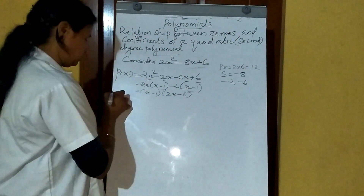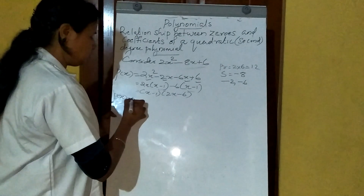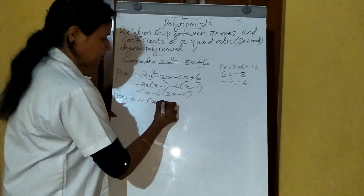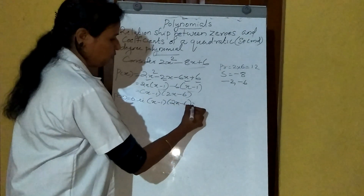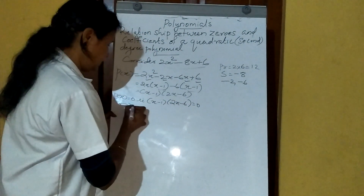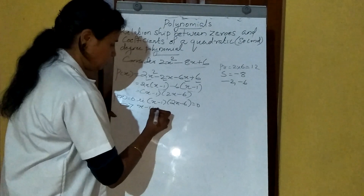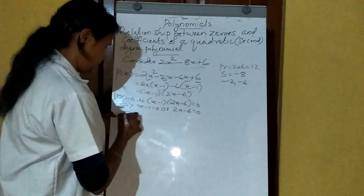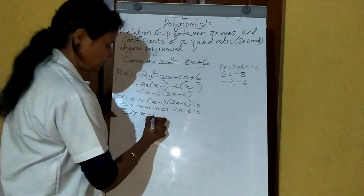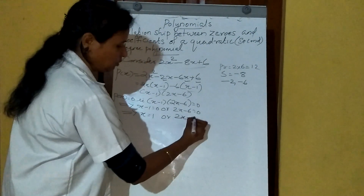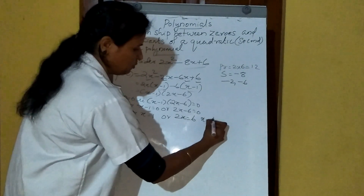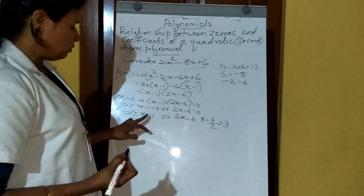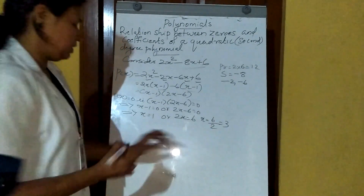For finding zeros, we take p(x) equal to 0. That is, (x minus 1) into (2x minus 6) equals 0. So x minus 1 equals 0 or 2x minus 6 equals 0, which implies x equals 1 or 2x equals 6, so x equals 6 divided by 2 equals 3. Therefore, the zeros are 1 and 3.